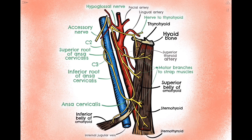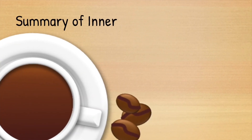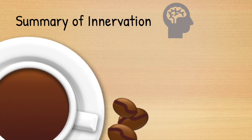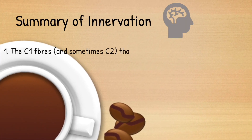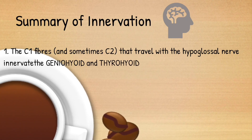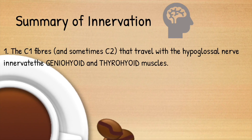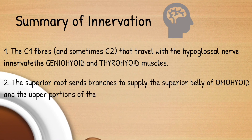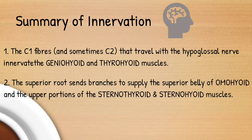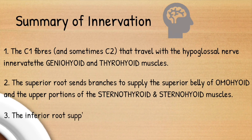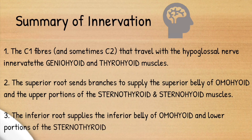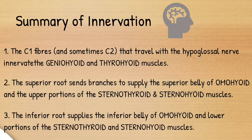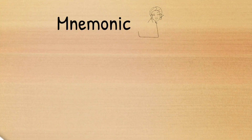So today we've covered the nerve loop called Ansa Cervicalis. Let's have a quick look at the important points before we finish. Firstly, the geniohyoid and thyrohyoid muscles are innervated by C1 fibers that travel with the hypoglossal nerve. Secondly, the superior root supplies the superior belly of omohyoid and the upper parts of the sternothyroid and sternohyoid muscles. Finally, the inferior root innervates the inferior belly of omohyoid as well as the lower portions of sternothyroid and sternohyoid.